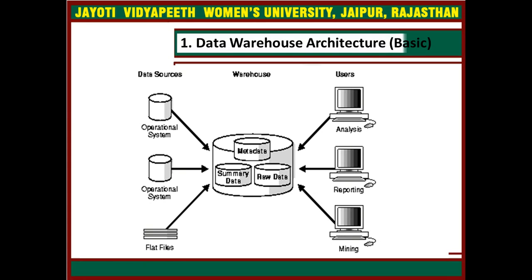The figure illustrates basically three things. First is Data Stores — data stores can be operational systems and flat files. Second is metadata, summary data, and raw data. Third is users — that is analysis, reporting, and mining. This figure displays the metadata and raw data of the standard OLTP method, that is online analytical processing. Summary data is an additional type of data. Summaries are very useful in data centers as they pre-compute long-term operations in advance. For example, a standard data warehouse query is to retrieve sales like August. In Oracle, this is referred to as a materialized view.